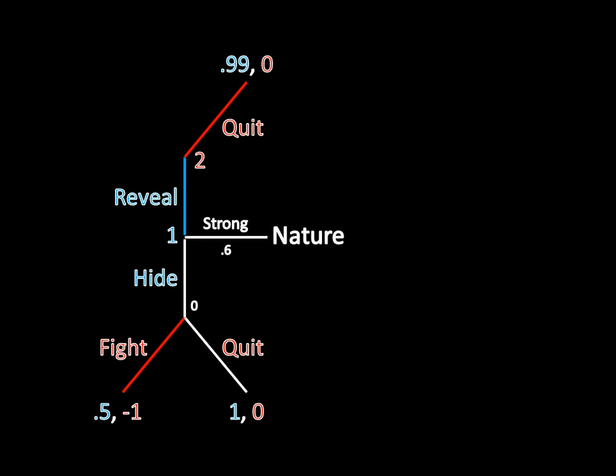His alternative is to hide. Now, Player 1 is not supposed to do that according to this equilibrium strategy. And as a consequence, Player 2 is under the false impression that Player 1 is weak if Player 1 as the strong type were to do this. And because Player 2 thinks that Player 1 is weak, she fights. In that case, Player 1 gets a payoff of 0.5.